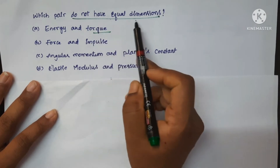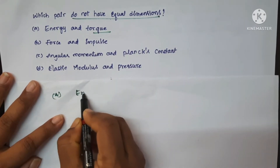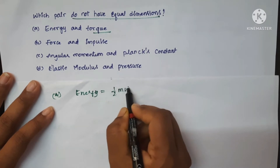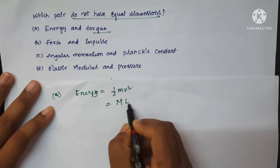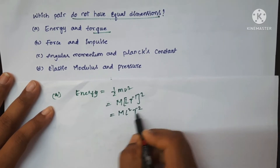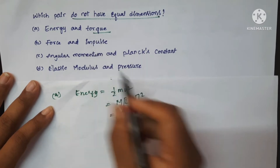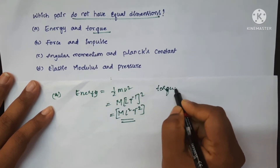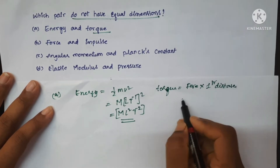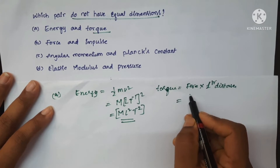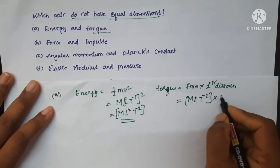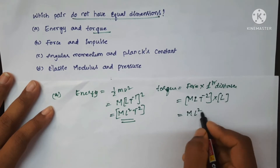Which pair does not have equal dimensions? First find for energy — both potential energy and kinetic energy have the same dimensions. Finding for kinetic energy that is half M v square: for mass M, for velocity L T power minus 1 squared, which gives M L square T power minus 2. This is the dimension formula for energy. For torque — formula is force into perpendicular distance. Dimensions of force are M L T power minus 2, and perpendicular distance is L. Which gives M L square T power minus 2.